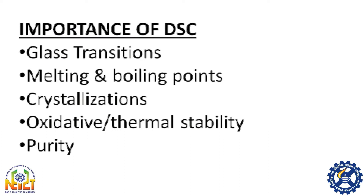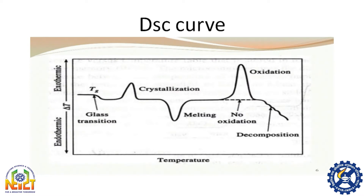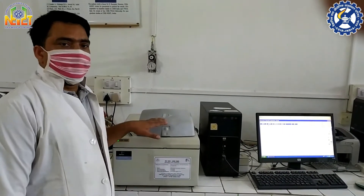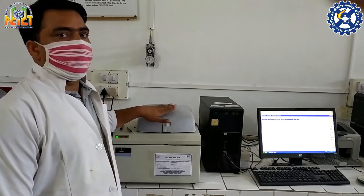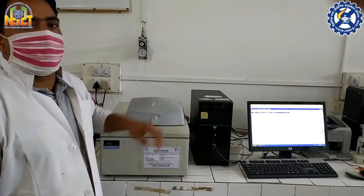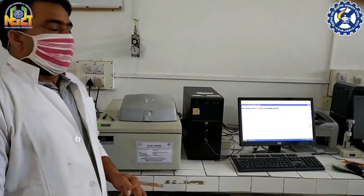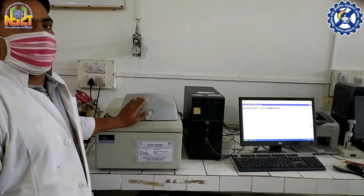What can DSC measure? We can measure glass transition, melting and boiling point, crystallization, oxidative thermal stability, and purity of polymers and other samples. DSC is a thermal analysis technique in which the sample is heated under an inert gas environment at a controlled heating rate, and this instrument gives us information about our polymer sample.